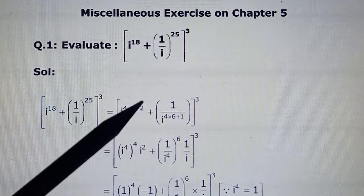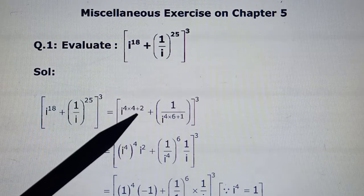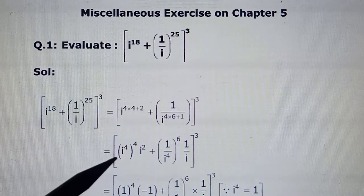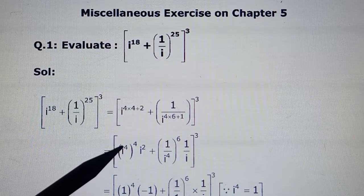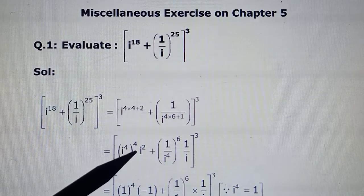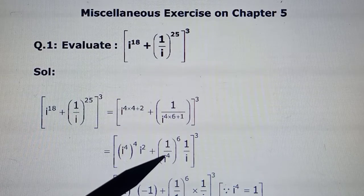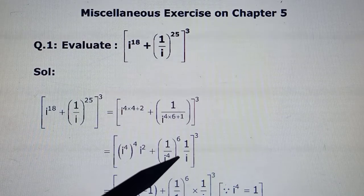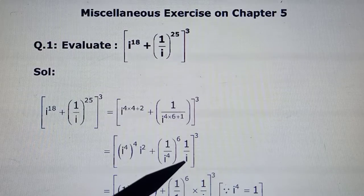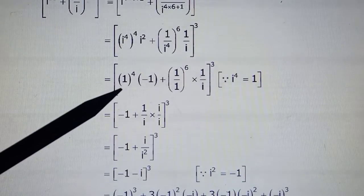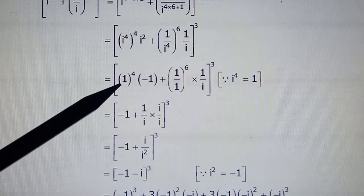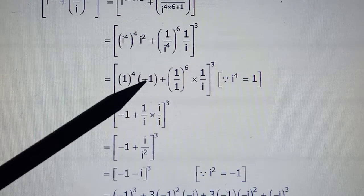Again, we know i^4 becomes 1, and 1 to any power is 1. So now you have only i^2 left. So i^4 raised to the power 4 times i^2, this one i^4 to the power 6 times i. Now putting the values, i^4 becomes 1, so i^2 is -1.